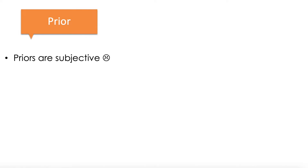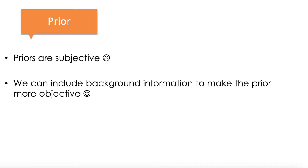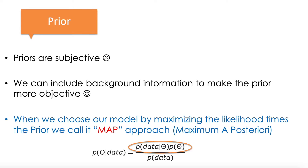The problem with priors is that in general they are subjective. The good thing is we could eventually include background information to make priors more objective. If we choose our model by maximizing the likelihood times the prior, we call it the MAP approach — maximum a posteriori — which combines both terms in the upper part of our posterior formulation, balancing the fit of the model to the data and the prior of the model.